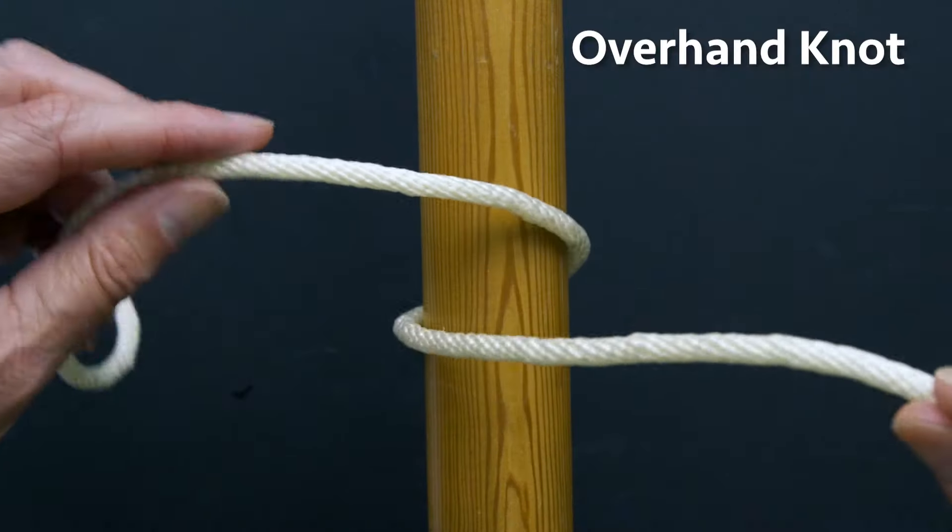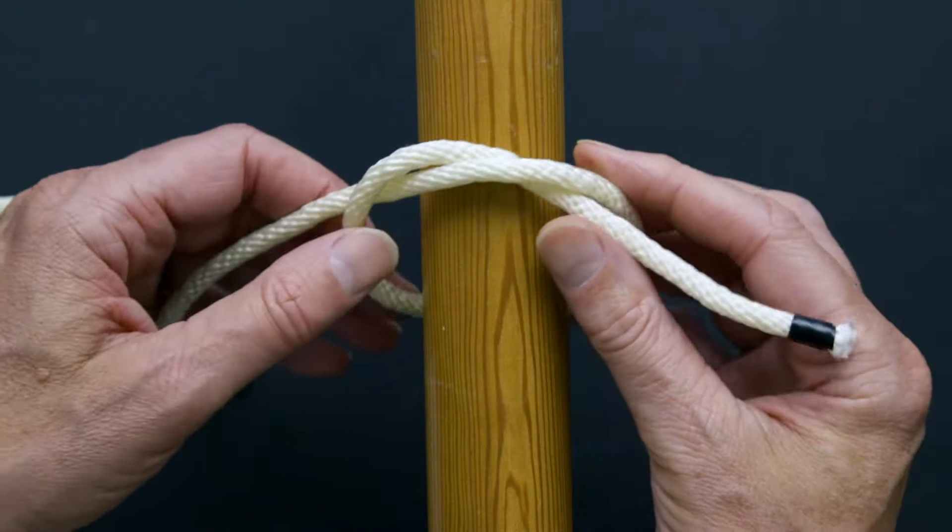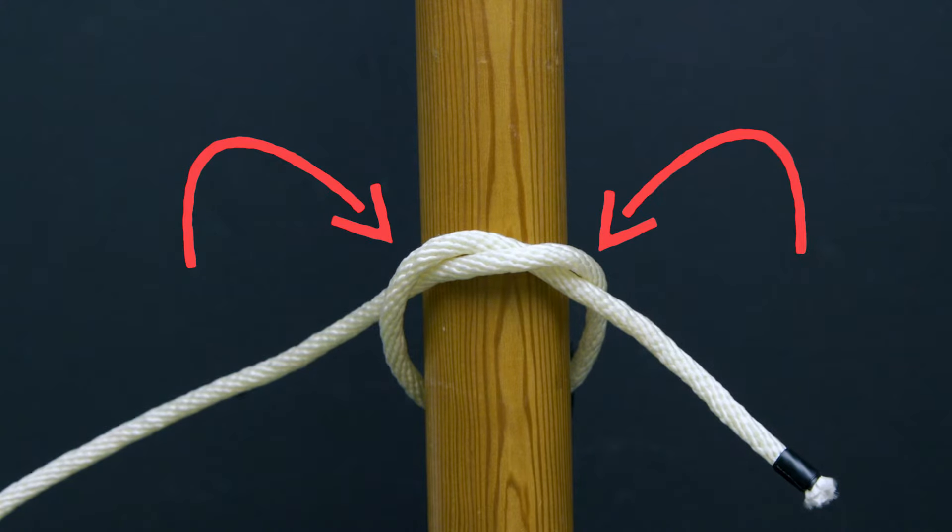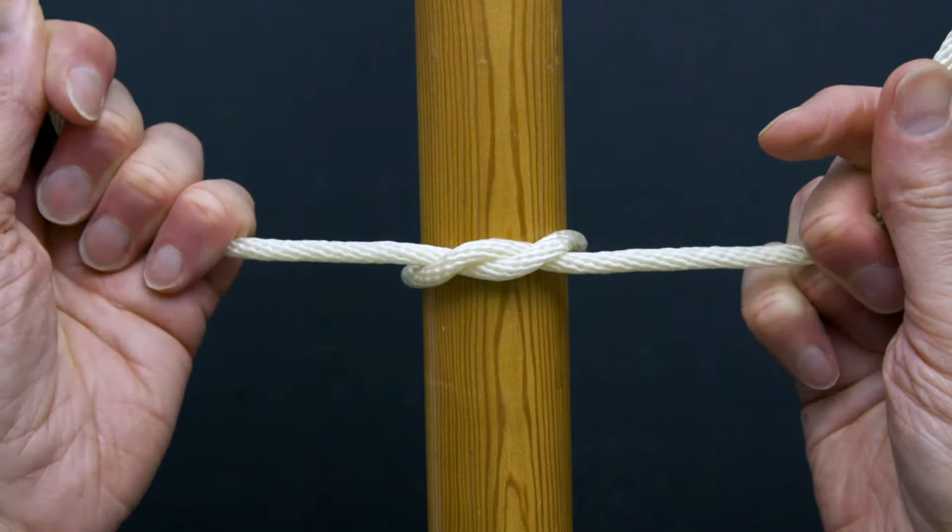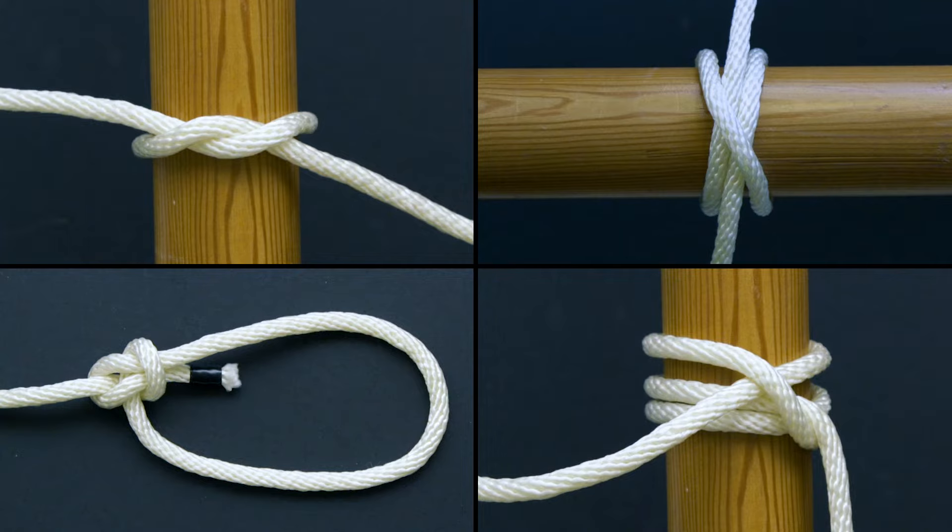This is a simple overhand knot, one of the most common knots in the world. You've tied it a million times when you've tied your shoes. Here you see two nips, the point where the knot bites into the line below it when tightened. This point of maximum friction and pressure is where the work is done in a knot. Just paying attention to where the nips are will help you remember how to tie many knots and let you know when you're tying it correctly or incorrectly.